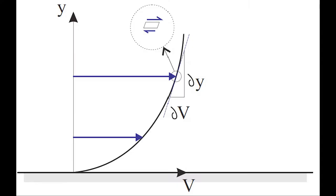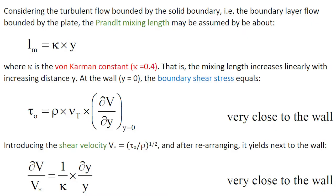Considering the turbulent flow bounded by the solid boundary, the Prandtl mixing length may be assumed to be about kappa times y, where kappa is the von Karman constant equal to about 0.4. That is, the mixing length increases linearly with increasing distance y.